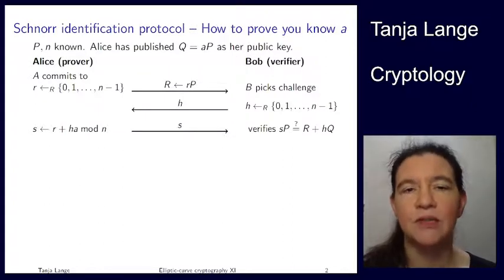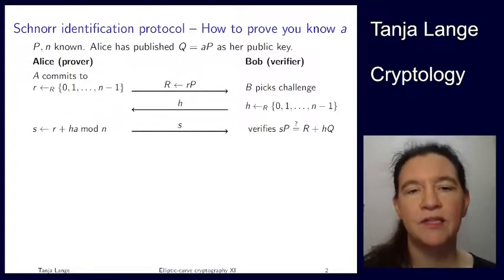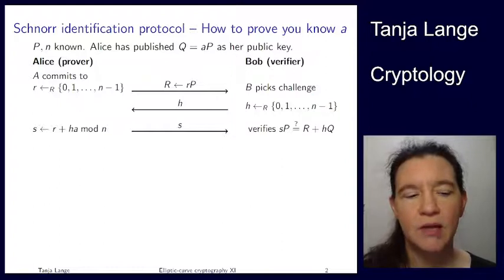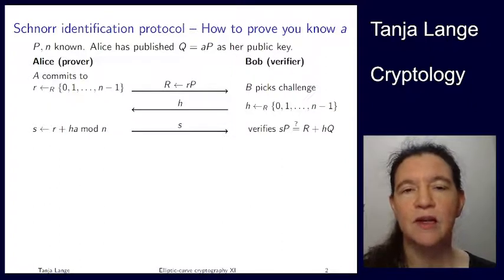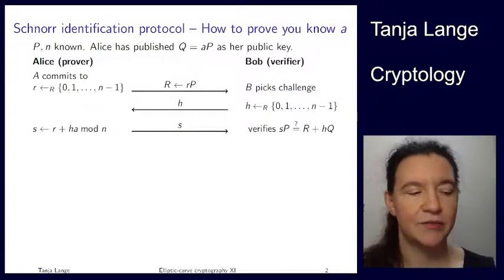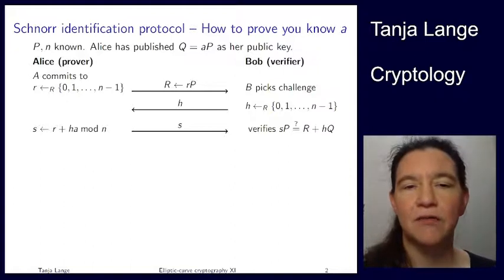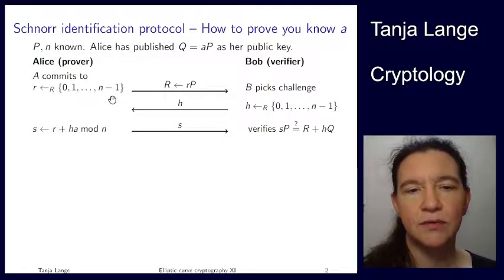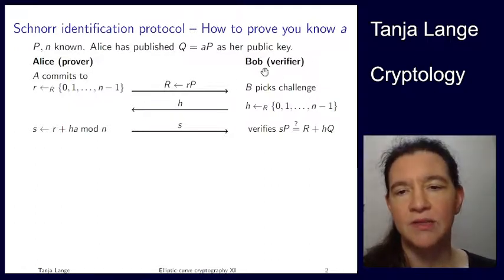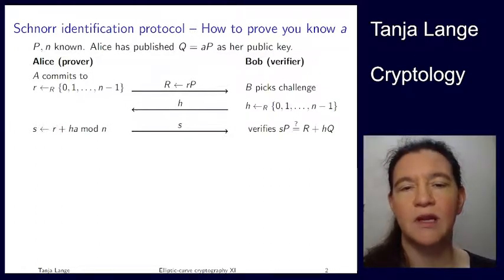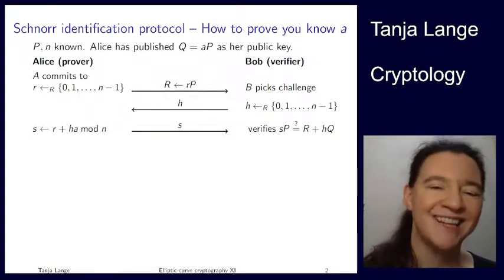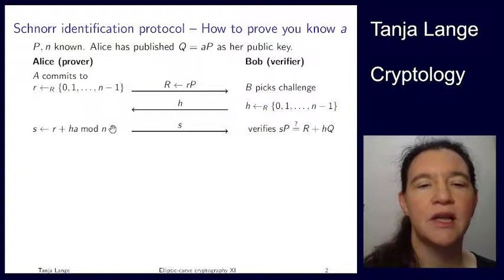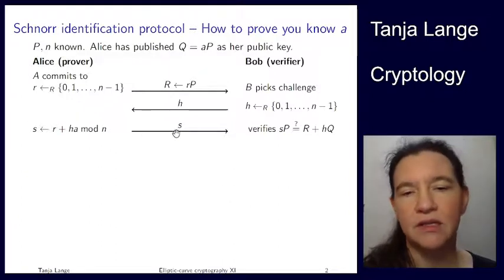An identification protocol is something interactive, and we see here some data flow. You read this from the start of the arrow in the direction where the arrow is pointing. This starts first, then we go here, then comes here. This arrow points right to left, and then the last one starts on the left, is sent over, and then goes to the right.